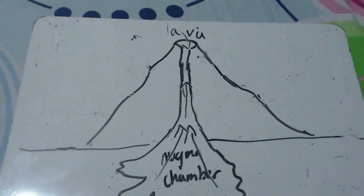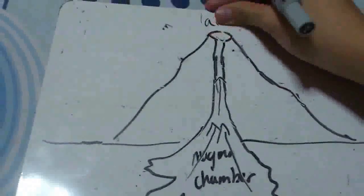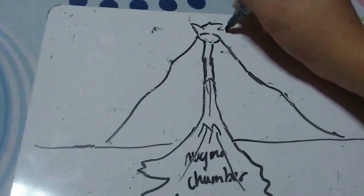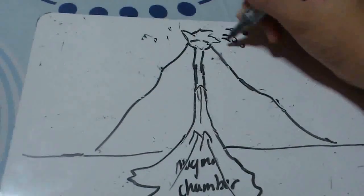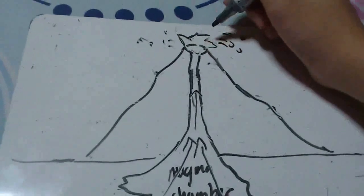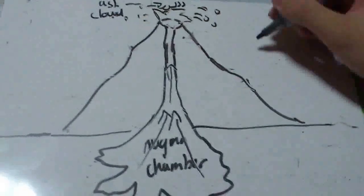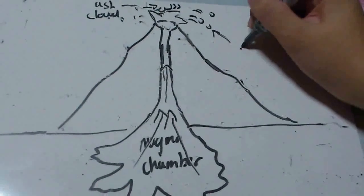When the volcano erupts, magma from the magma chamber rises to the surface through the vent. Magma is ejected onto the Earth's surface as lava. The lava builds up around the vent, solidifying to form a small volcanic cone, and the bowl-shaped opening is called the crater.